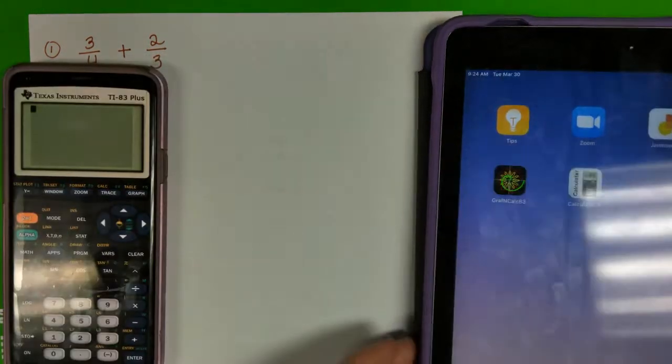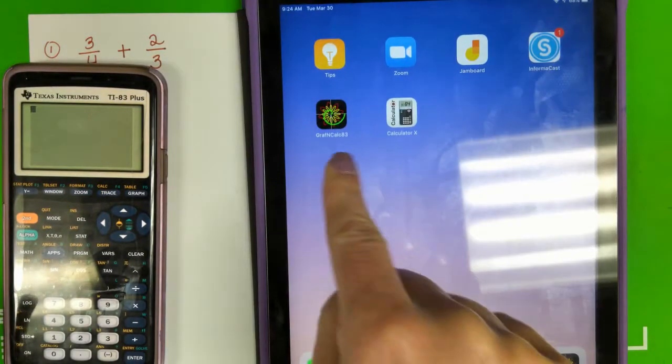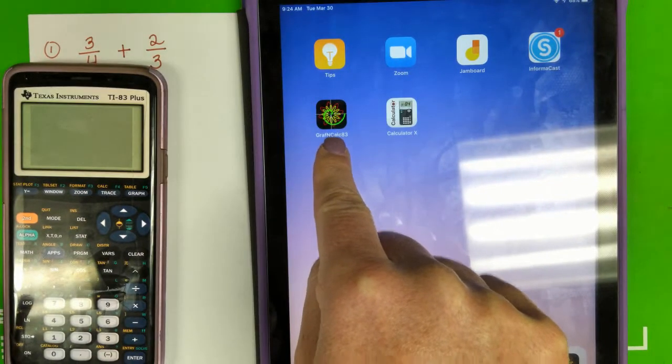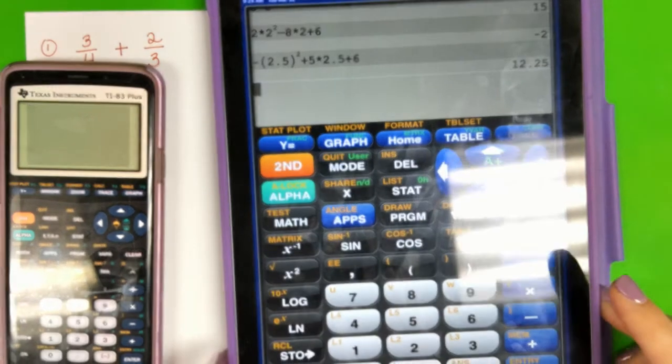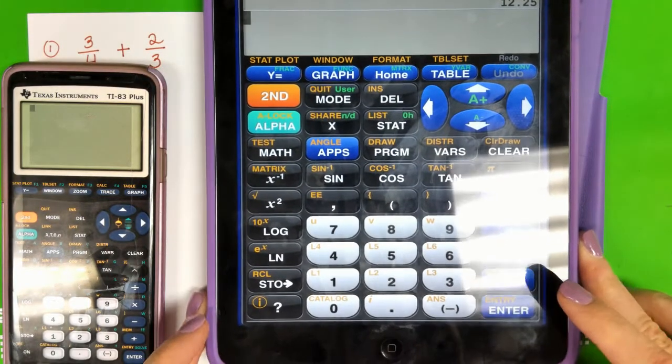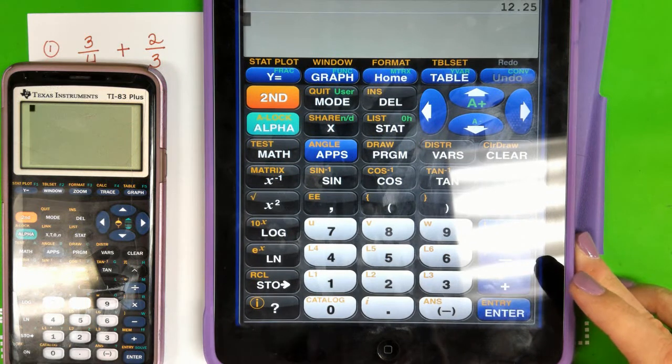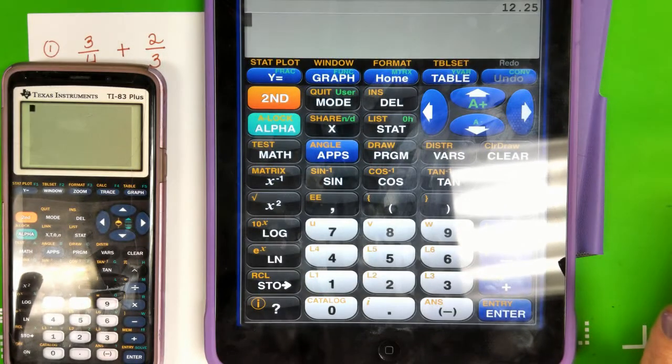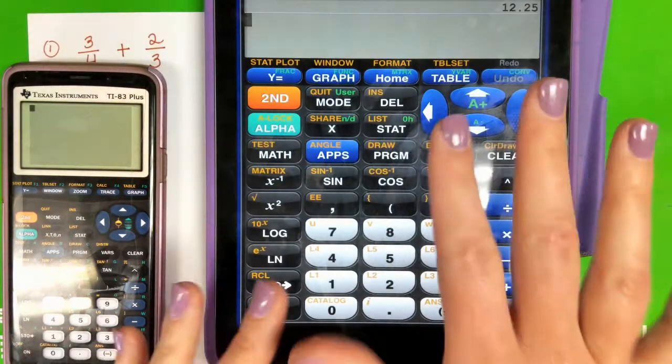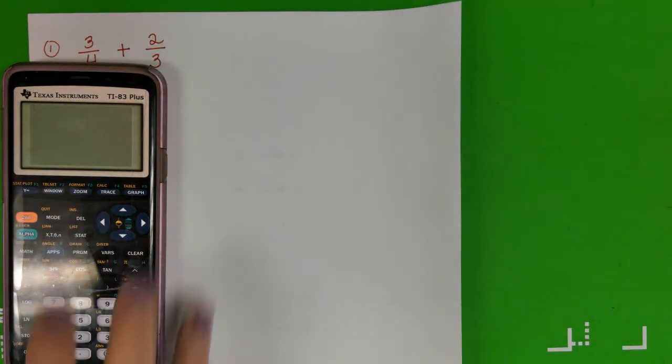But I also want to show you on your iPhone you could download the Graph and Calc 83, and you would see that it looks very similar. There are a few buttons that are a little bit different, but I think it will be obvious. I'm not going to show you both of them at the same time, but I think you'll very easily be able to find what we're talking about if you're using an iPhone versus the actual calculator or Android.